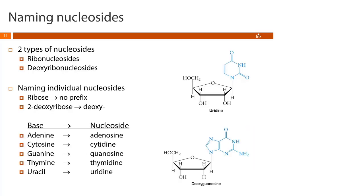For naming nucleosides, there's no simple rule — you need to memorize the table. If the base is adenine, the nucleoside name is adenosine. For cytosine, it's cytidine. For guanine, guanosine. For thymine, thymidine. And for uracil, uridine.